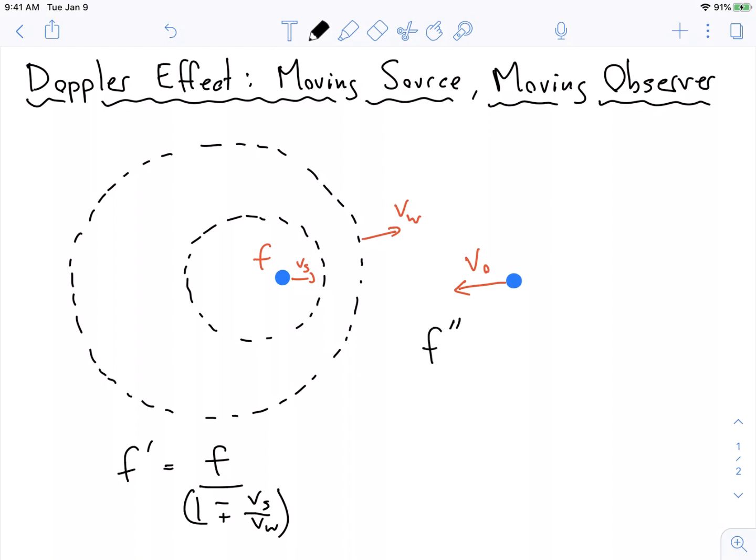The frequency that this observer hears is the shifted frequency, the frequency that is a result of these squished little wavelengths, times the effect from it actually moving towards or away from these wavelengths.